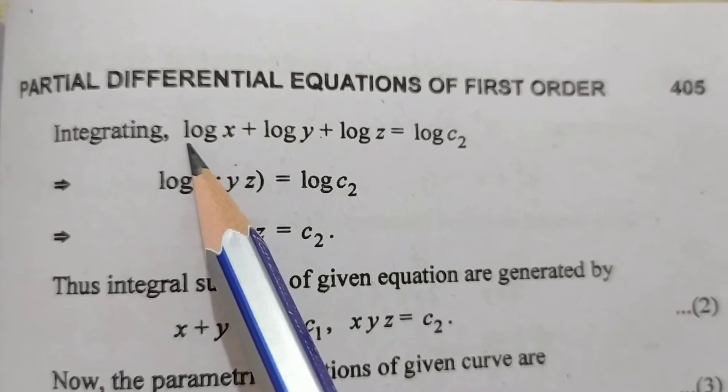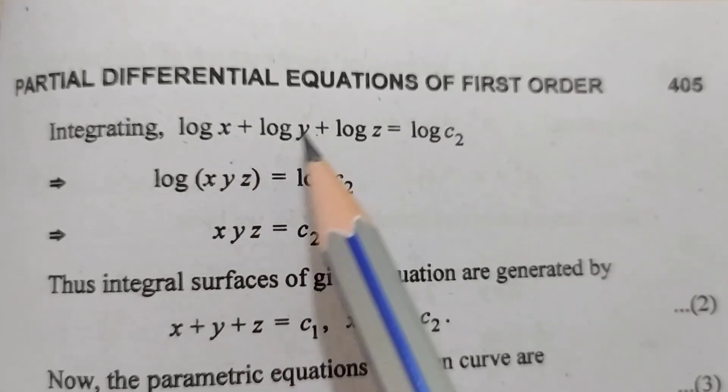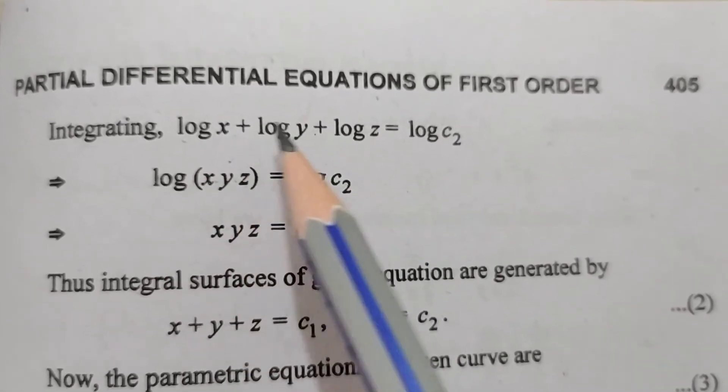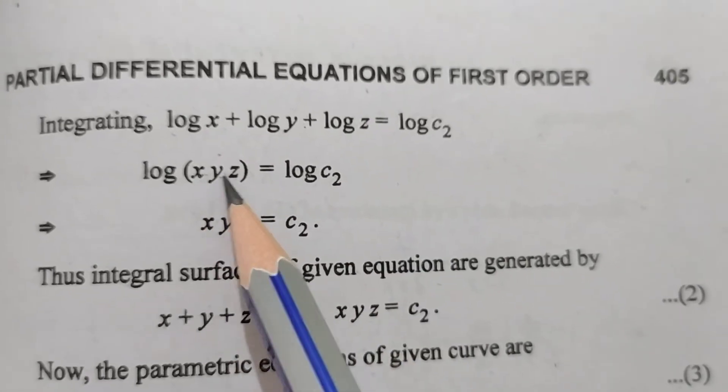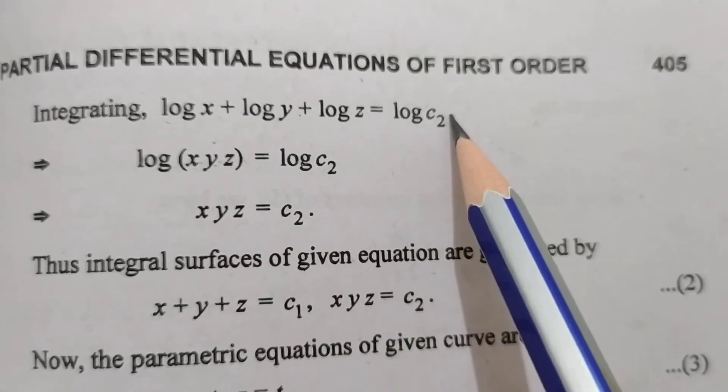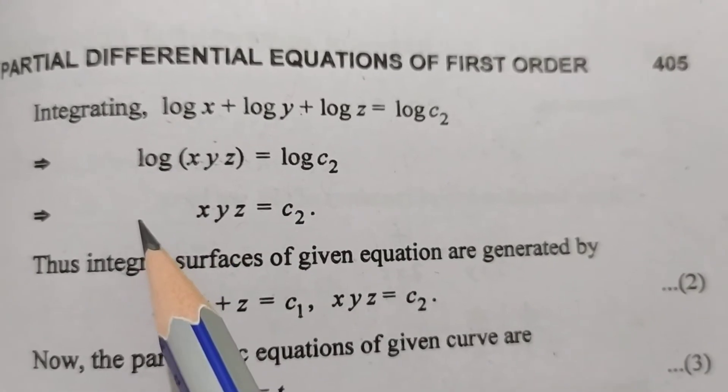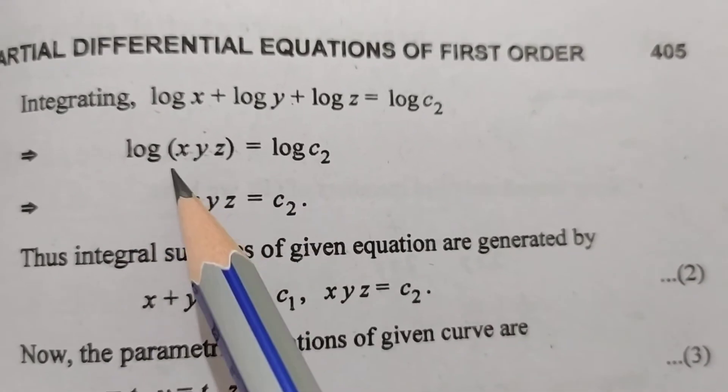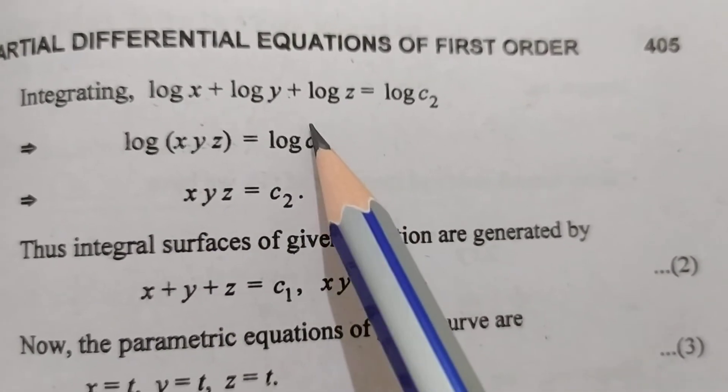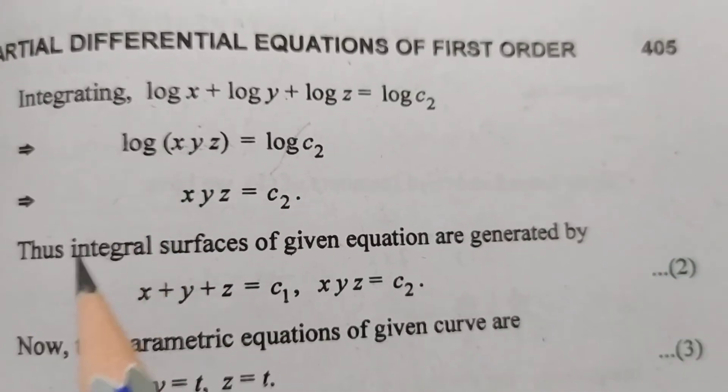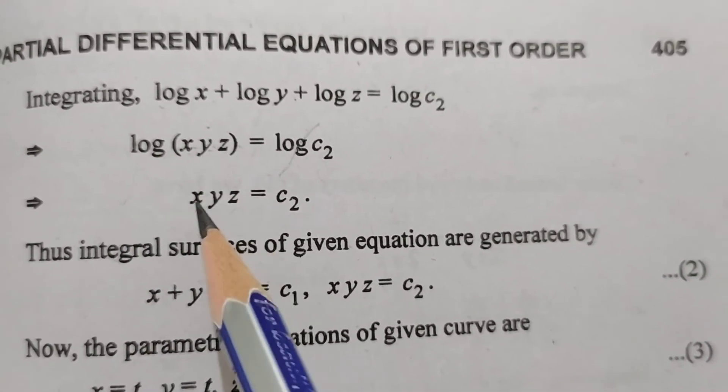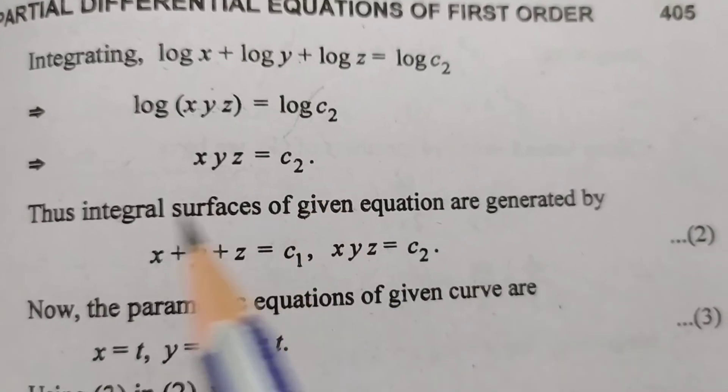The formula is log m + log n equals log(m times n). We have three terms, so log(xyz) = log c2. When log appears on both sides, they cancel. Therefore, xyz = c2.